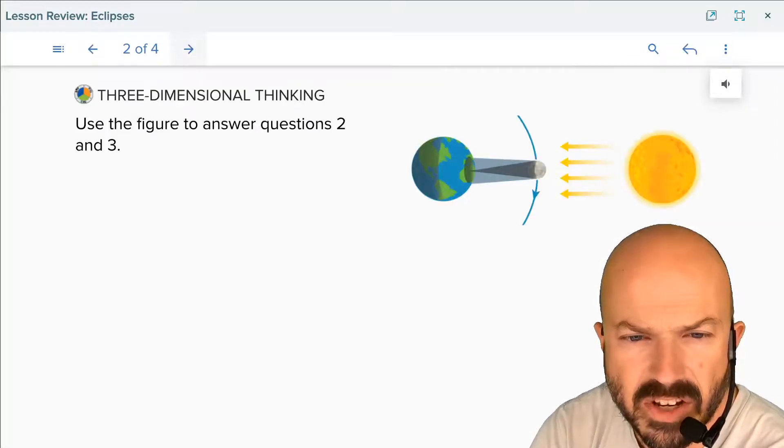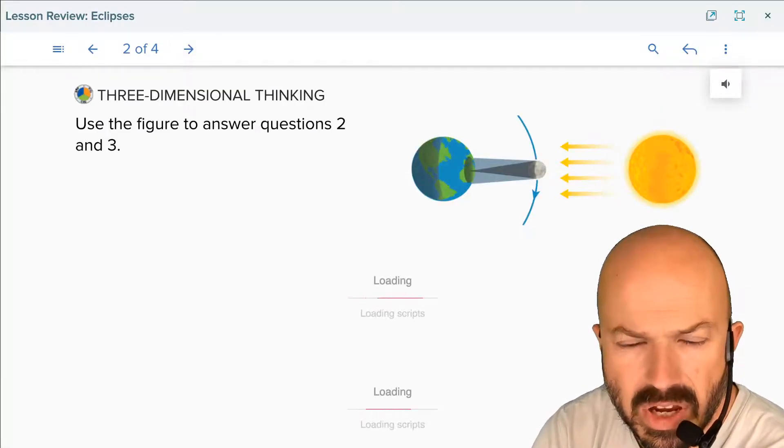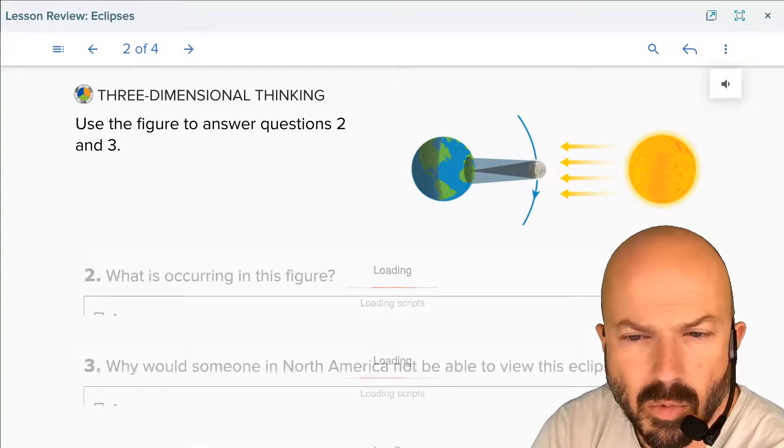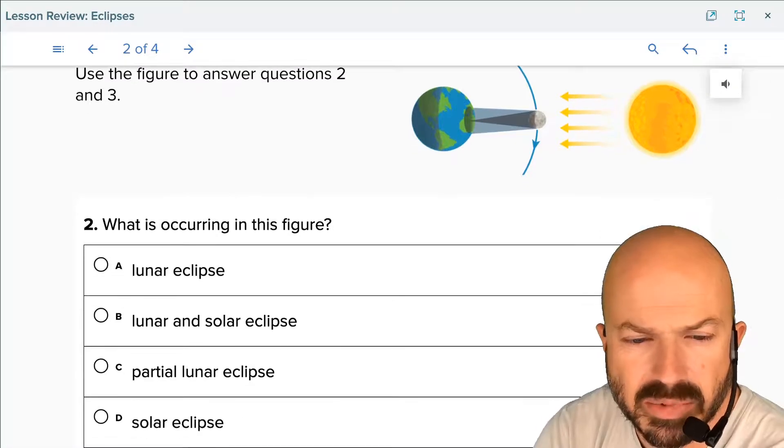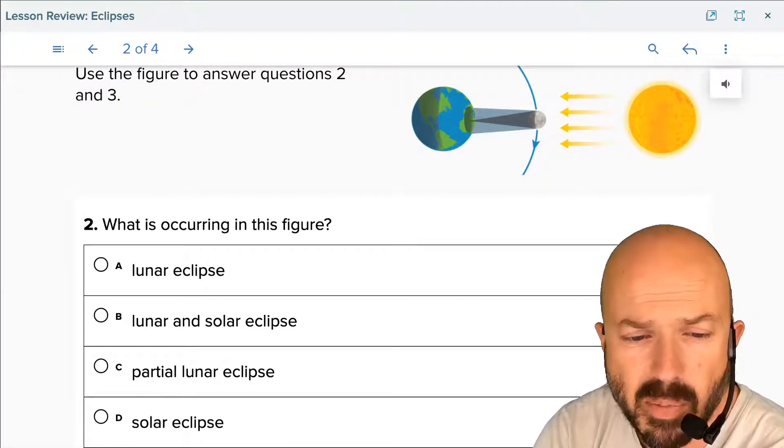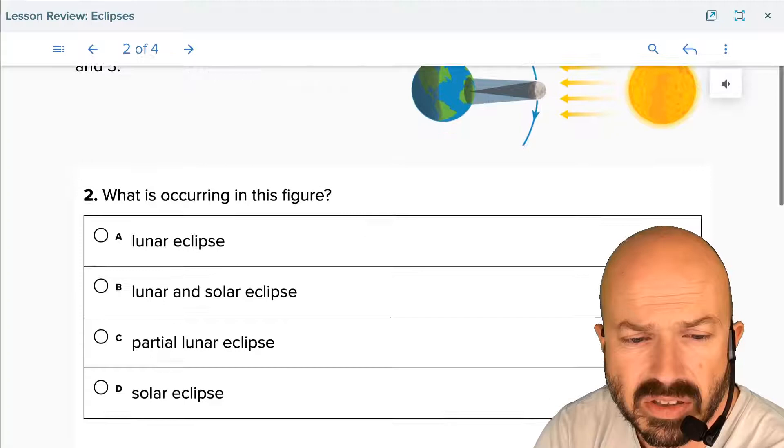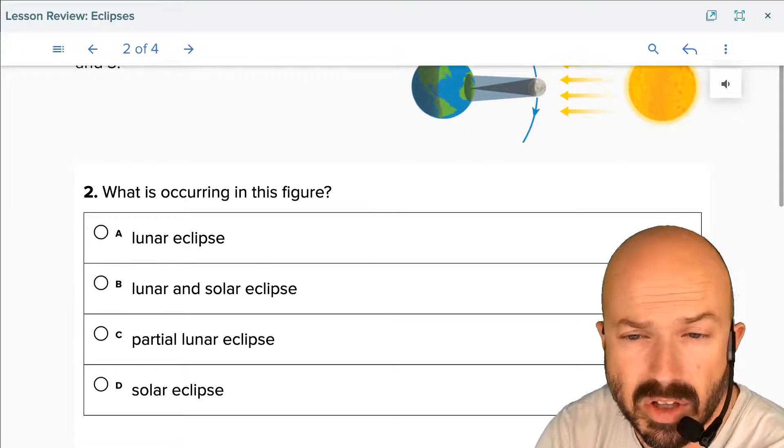We're going to use this figure to answer questions two and three. What is occurring in this figure? Is it a lunar eclipse, a lunar and solar eclipse, a partial lunar eclipse, a partial solar eclipse, or just solar eclipse?